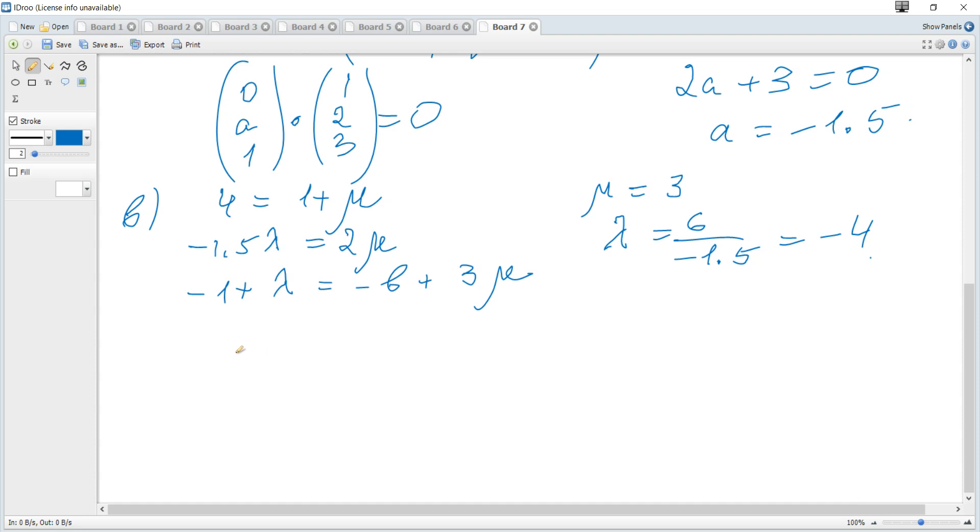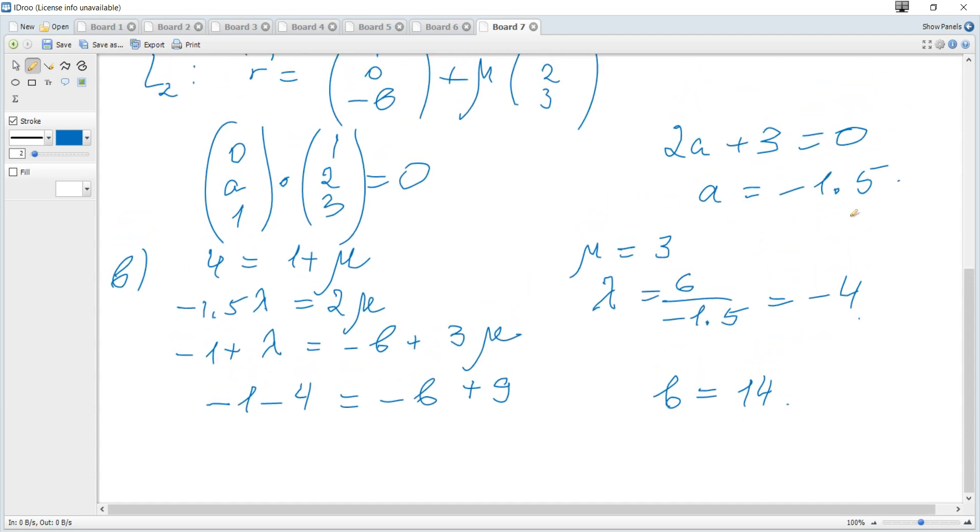And substituting into the third, we get that negative 1 minus 4 is equal to negative B plus 9. Hence, B is 9 plus 5, which is 14. So A is negative 1.5 and B is 14.